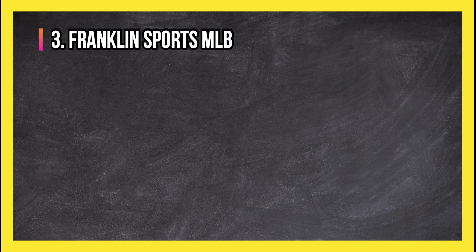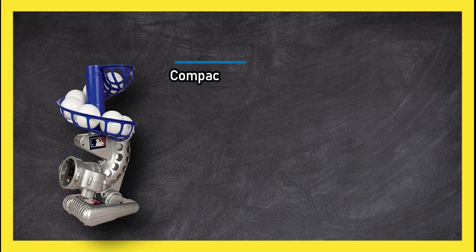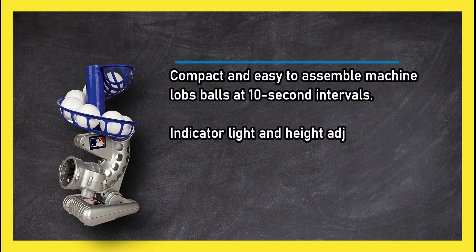At number 3, Franklin Sports MLB. Compact and easy to assemble machine lobs balls at 10 second intervals. Indicator light and height adjustment are nice features.